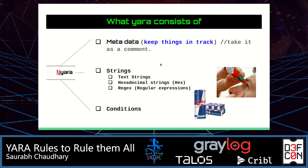A YARA rule consists of three things: metadata to keep things in track, strings, and conditions. For strings, you can use text strings, hexadecimal strings — which is the fun part — and regex, which is generally not recommended. Writing a rule based on a unique string identifier doesn't take more than 10 minutes. A good YARA rule will consist of bytes and not just strings, and you'll find those bytes based on critical thinking about functions, code reuse, and program flow.